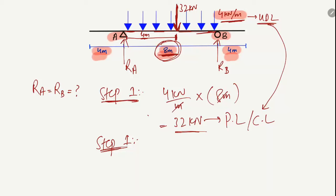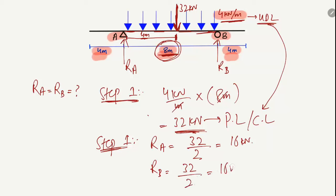Step number two: now that we have changed the uniformly distributed load into a pointed load, we find RA by simply dividing this pointed load by two: 32 ÷ 2 = 16 kilonewtons. Similarly, RB equals the pointed load divided by two, which also gives 16 kilonewtons. So RA = 16 kilonewtons and RB = 16 kilonewtons.